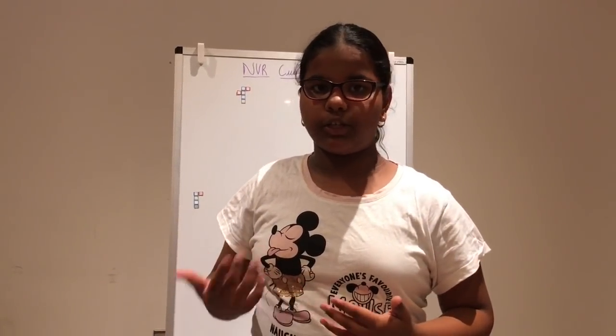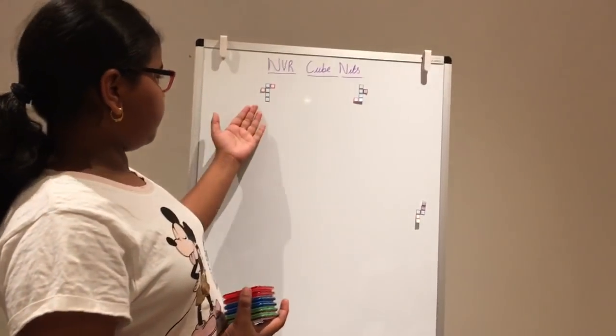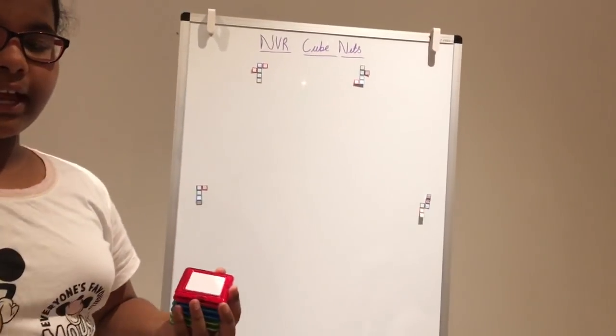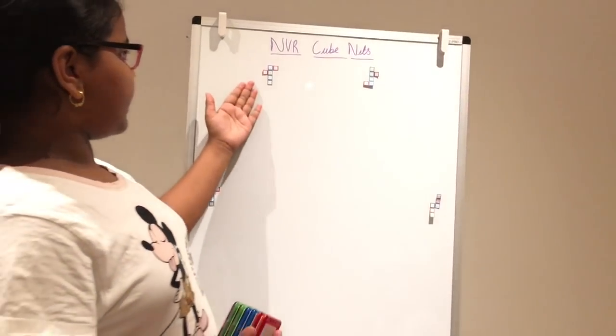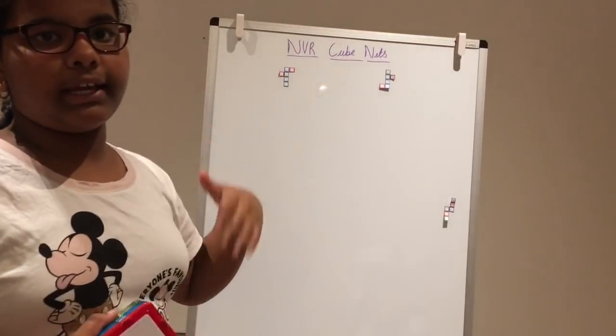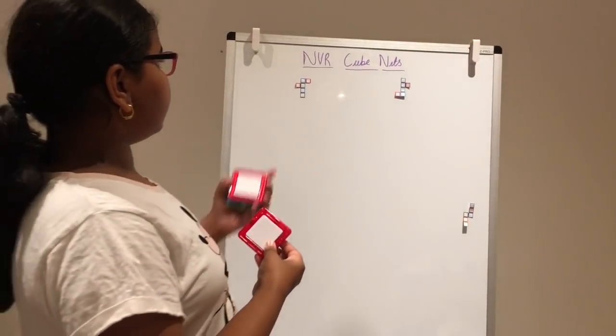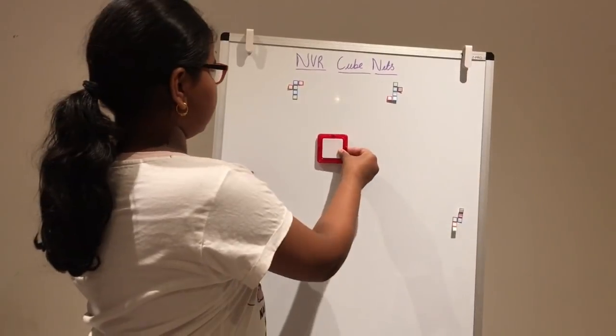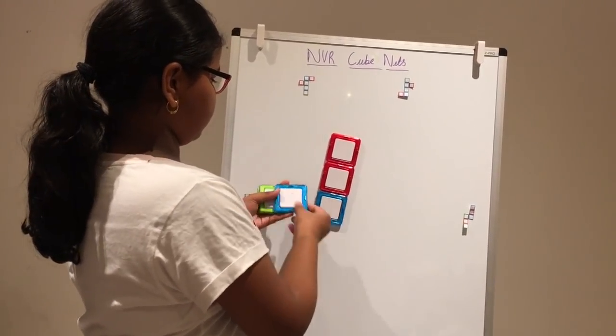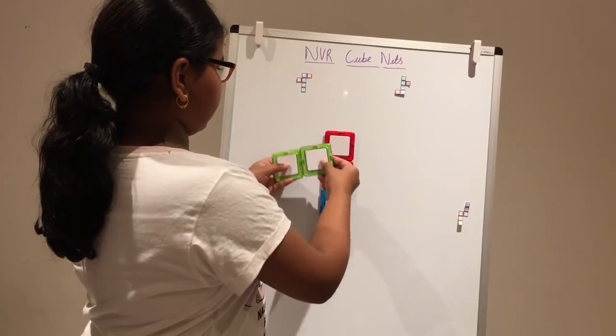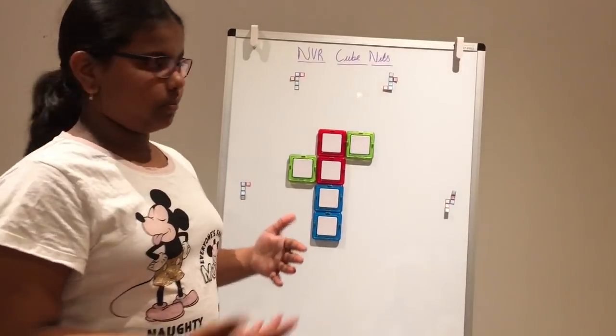Cube and cubenets. Here I have some cubenets and I have some squares here. And with these squares, I'm going to make the cubenet shown and try to fold it to make a square. Now, let's consist of this cubenet. Now, let's try and fold this cubenet to make a cube.